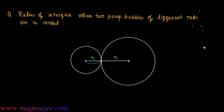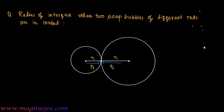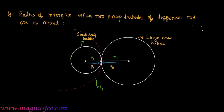r1 is the radius of the smaller soap bubble and r2 is the radius of the larger soap bubble. p1 and p2 are the pressures acting on the inner surface of the smaller and larger soap bubbles respectively. The interface of the two soap bubbles in contact is denoted here, with p1 acting on the inner surface of the small soap bubble.